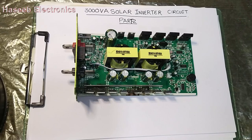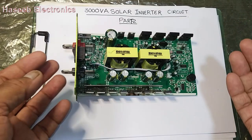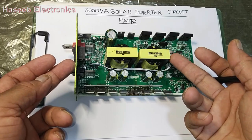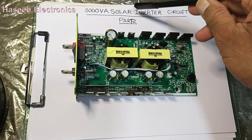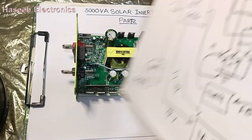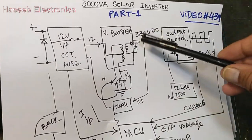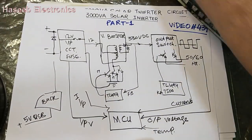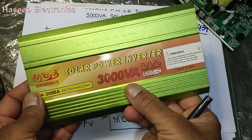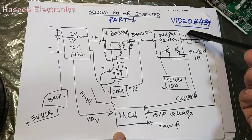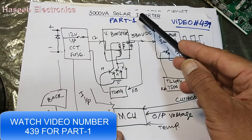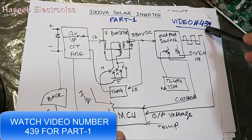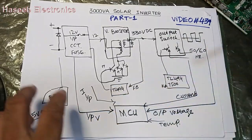Assalamu alaikum wa rahmatullahi wa barakatuh, welcome back to my channel. This is our second video on the 300 VA solar inverter circuit. In our last video we discussed the block diagram of this board. This inverter is 3000 VA. If you have not checked part one, I suggest you check video number 439 on my channel where I discussed the configuration of this circuit.